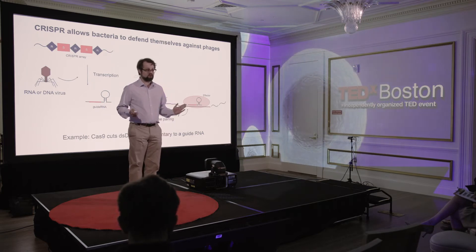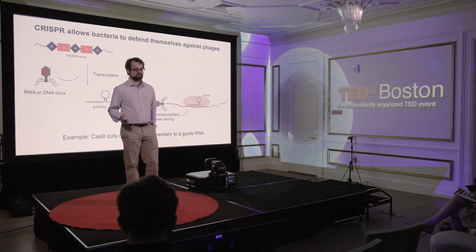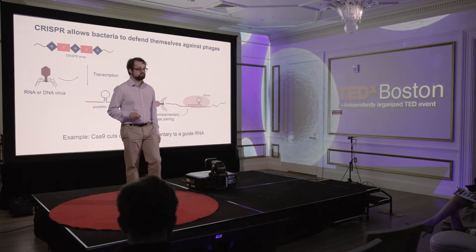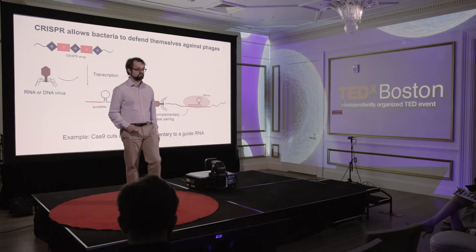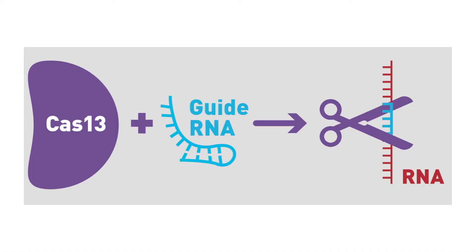I'm not going to talk about Cas9 today. I'm actually going to talk about a different CRISPR effector protein, namely Cas13, which cuts RNA instead of DNA. Like Cas9, Cas13 uses a guide RNA to direct itself to particular RNA sequences of interest.